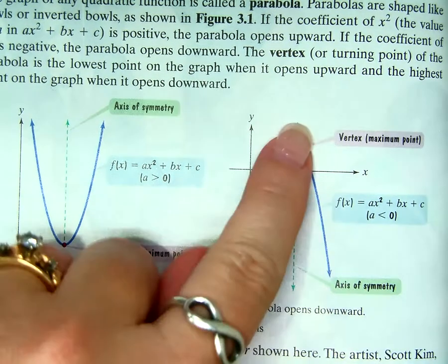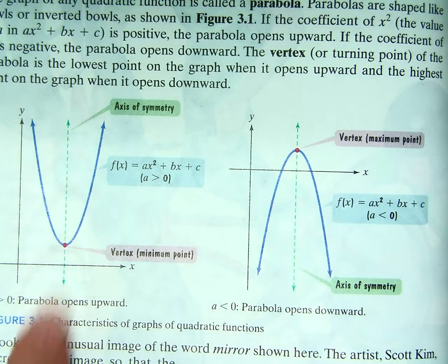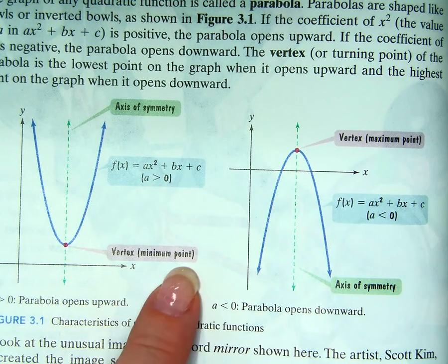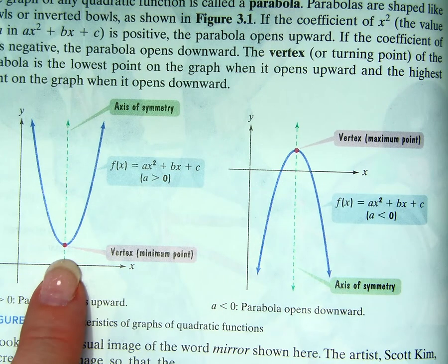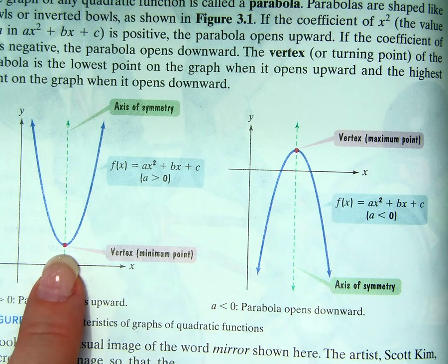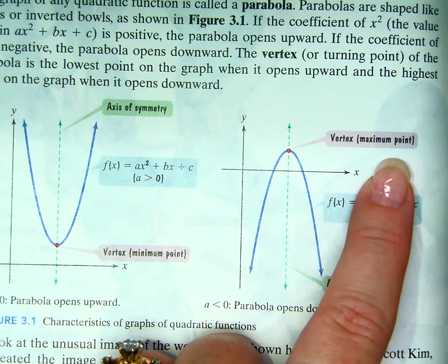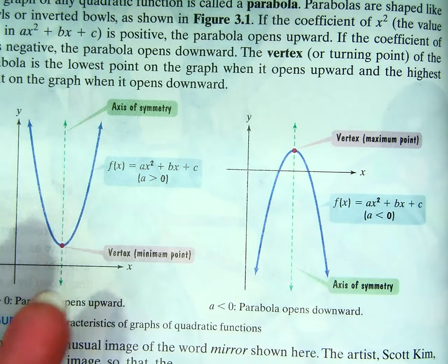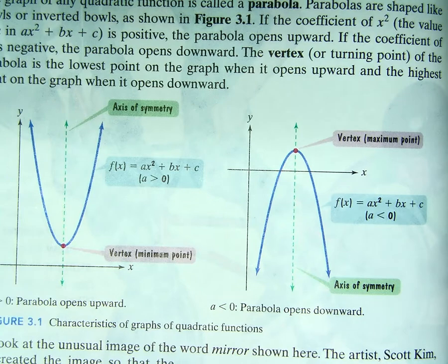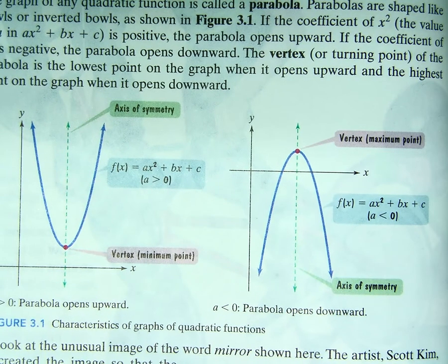Still the same kind of things of axis of symmetry. Now this one, the vertex is called the minimum point. Why is that, you think? Why is this vertex called the minimum point? It's the lowest point of the graph. Why is this vertex called the maximum point? Highest part of the graph. That's not any sort of trickiness or anything like that. It's pretty obvious why it's called that.